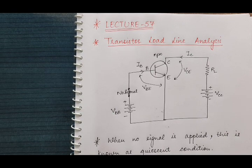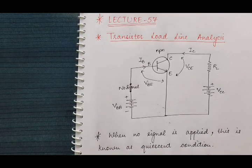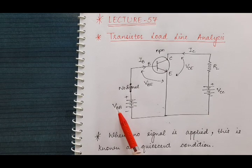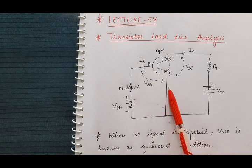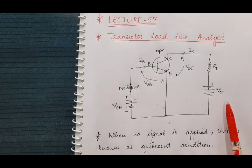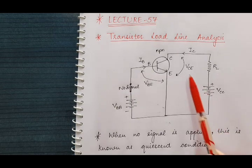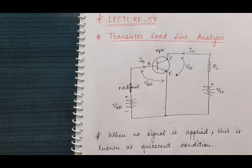Its input junction must be forward biased and its output circuit must be reverse biased at all times. Here, VBB is the biasing voltage or DC voltage which we have provided to forward bias this base-emitter junction. And on this side, VCC is the DC biasing voltage which we have applied to the output circuit to reverse bias it at all times.